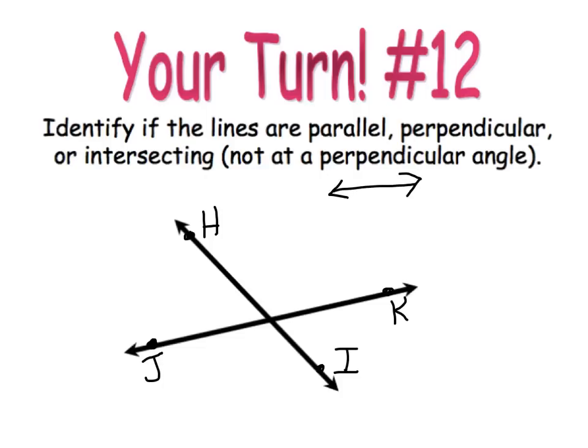Okay. If you're back, we have line HI and line JK. And I don't see that there is a right angle because it would be marked if there were. So these two intersect.